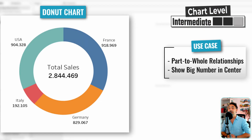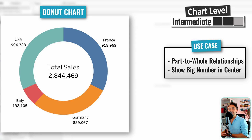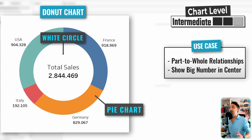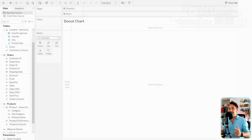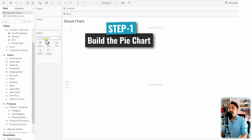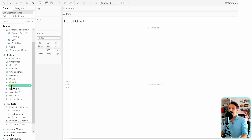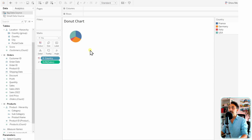Moving on to the donut chart. The donut chart is very similar to the pie chart — you still have the part-to-whole analysis, a circle with different segments. But many people prefer the donut chart because we can add extra information in the center. To build it, we need two charts: the first is a pie chart and the second is the empty space in the middle. As before, switch Automatic to Pie, put Sum of Sales on Angle, and Country on Color.